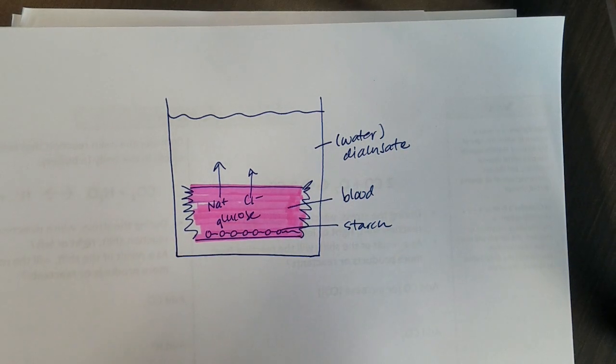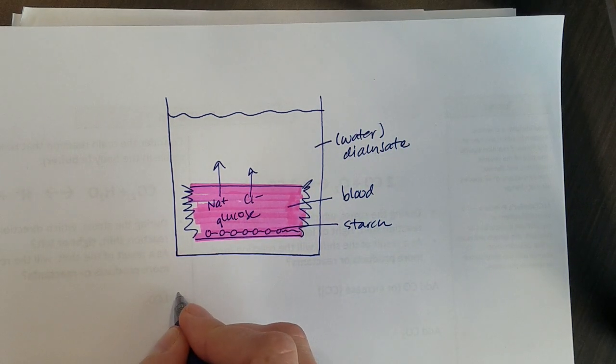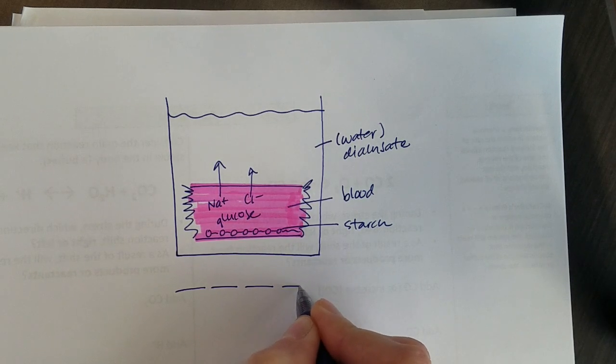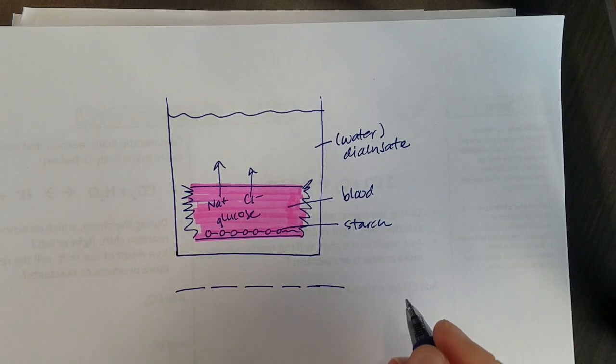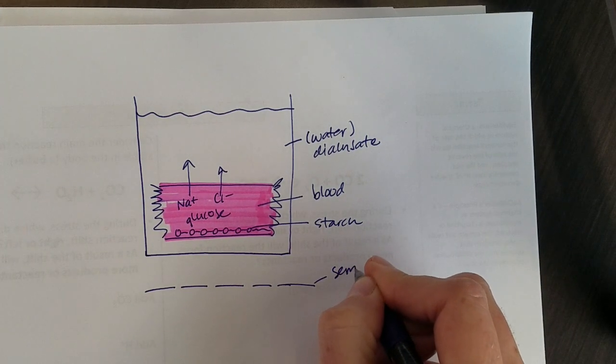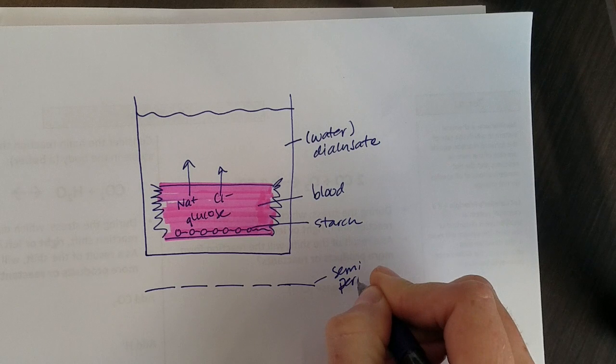This membrane is what we call semi-permeable. That means if I could look up close at the membrane it would have small holes in it, so this is a semi-permeable membrane.